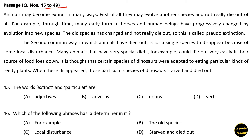The second common way in which animals have died out is for a single species to disappear because of some local disturbance. Many animals that have very special diets, for example, could die out very easily if their source of food falls away. It is thought that certain species of dinosaurs were adapted to eating particular kinds of plants; when these disappeared, those species of dinosaurs starved and died out.